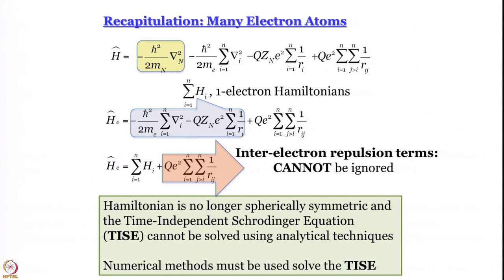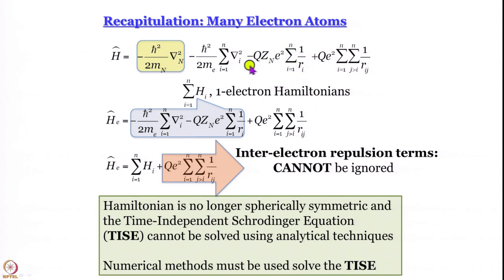We have learned that the way you write the Hamiltonian for a many-electron atom is that first you separate out the term for the kinetic energy of the nucleus or center of mass. What you are left with is a sum of n kinetic energy terms — one for each electron — and a sum of n nucleus-electron (proton-electron) attraction terms: minus q_n e² summed over i to n of 1/r_i. These turn out to be the one-electron Hamiltonians, and that is not a problem.